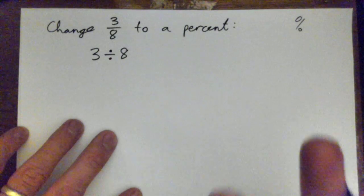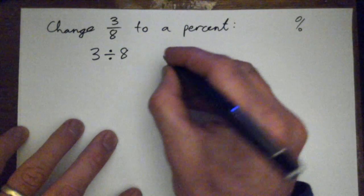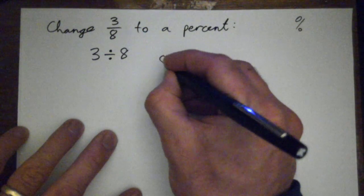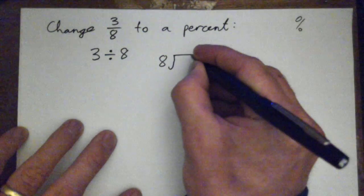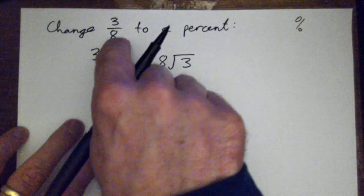And we can actually use division to do this. So three divided by eight actually looks like this when you do division. It's eight into three. Eight into three because that's the divisor.